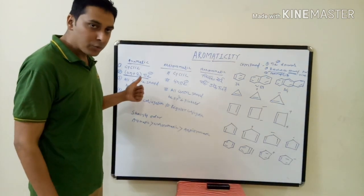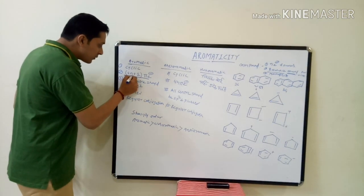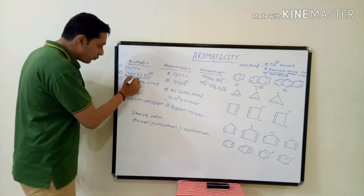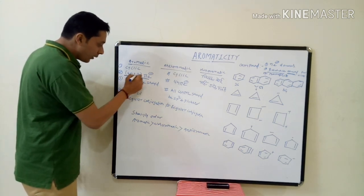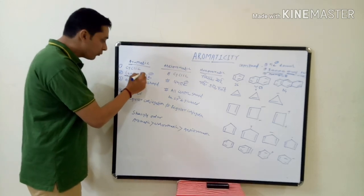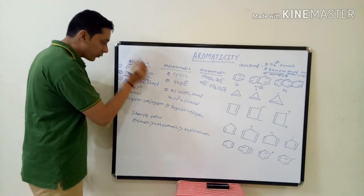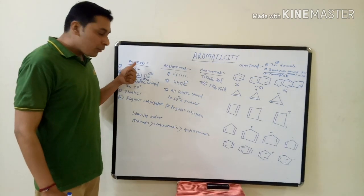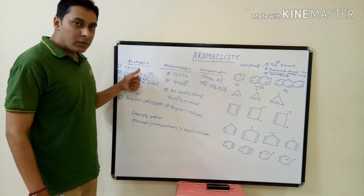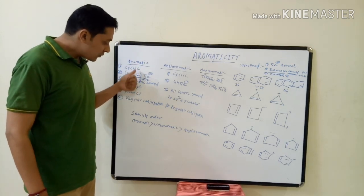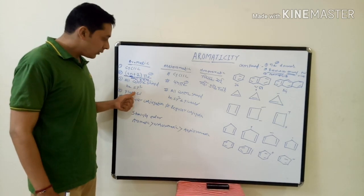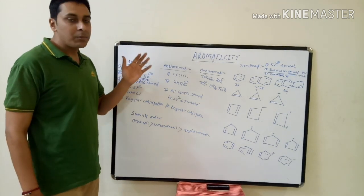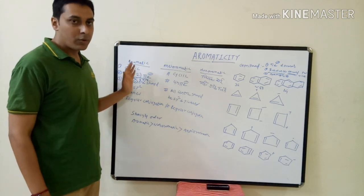In Hückel's rule, 4n+2 pi electrons — here n is a whole number. If n equals 0, then 2 pi electrons; if n equals 1, that gives 6 pi electrons; then 10, and so on. An aromatic compound must obey Hückel's rule and satisfy all the necessary conditions to have aromatic character.